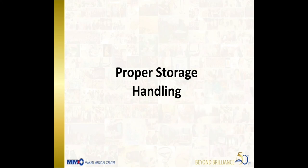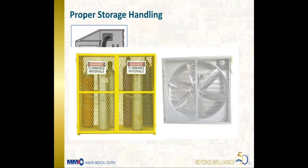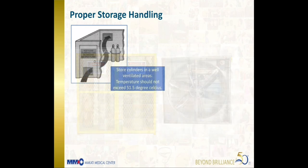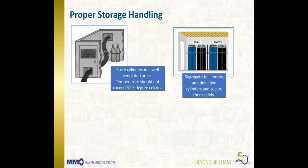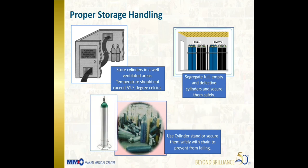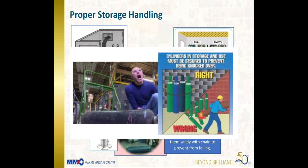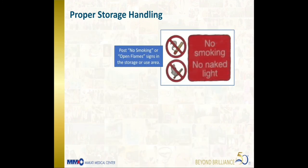Store cylinders in well-ventilated areas where temperature does not exceed 51.5 degrees Celsius. Allow cylinders to be stored under cover in enclosed, dry, and clean well-ventilated areas. Segregate full, empty, and defective cylinders and secure them safely. Segregation is a storage technique to avoid confusion, prevent delays, and wrong dispensing. Use a cylinder stand or secure cylinders with a chain to prevent them from falling, as freely standing cylinders are prone to falling or being knocked over, especially during disasters.